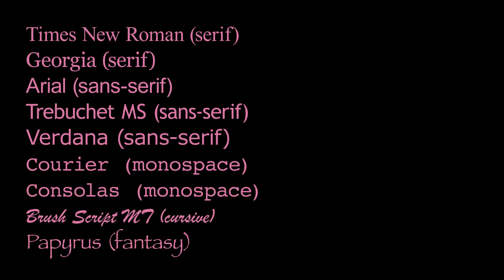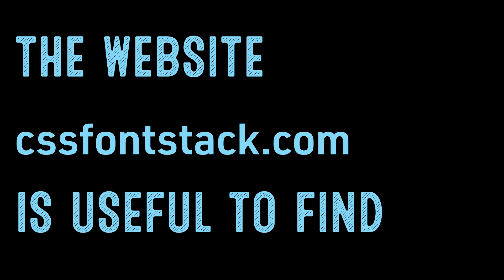Web-safe fonts include: Times New Roman (serif), Georgia (serif), Arial (sans-serif), Trebuchet MS (sans-serif), Verdana (sans-serif), Courier (monospace), Consolas (monospace, more Windows than Mac), Brush Script MT (cursive, more on Mac than Windows), and Papyrus (fantasy, more on Mac than Windows). In our example, we could not pull up Consolas, so it is actually displayed in Courier, because I am working on a Mac computer. The website cssfontstack.com is useful to find out the availability of web-safe fonts on various operating systems.